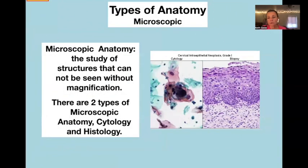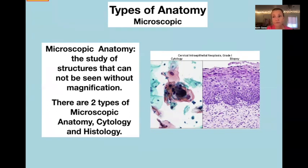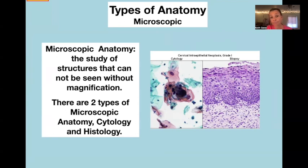Next, let's talk about the different kinds of anatomy. Generally, the two big categories are microscopic anatomy and gross anatomy. Microscopic anatomy is the study of structures that are too small to be seen without magnification, and there are two types of microscopic anatomy: cytology and histology.